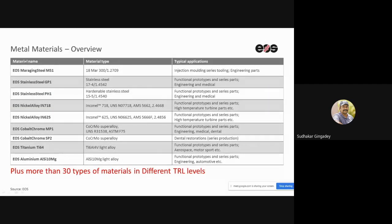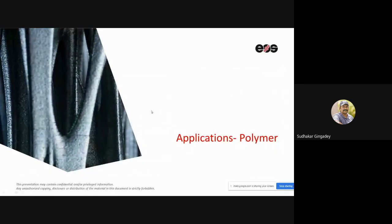For metal materials, EOS offers a range of base alloys. Beyond these, more than 30 material types are available at different TRL (Technical Readiness Level) stages — TRL levels are critical for aerospace and medical certification, ensuring materials can be formally qualified for those applications.